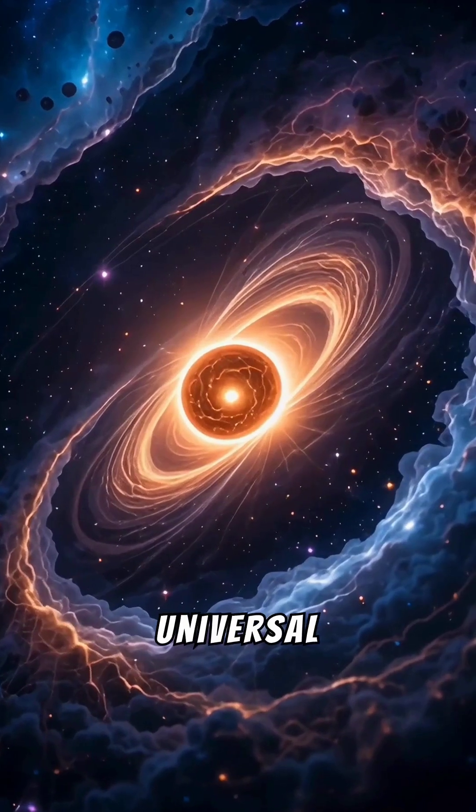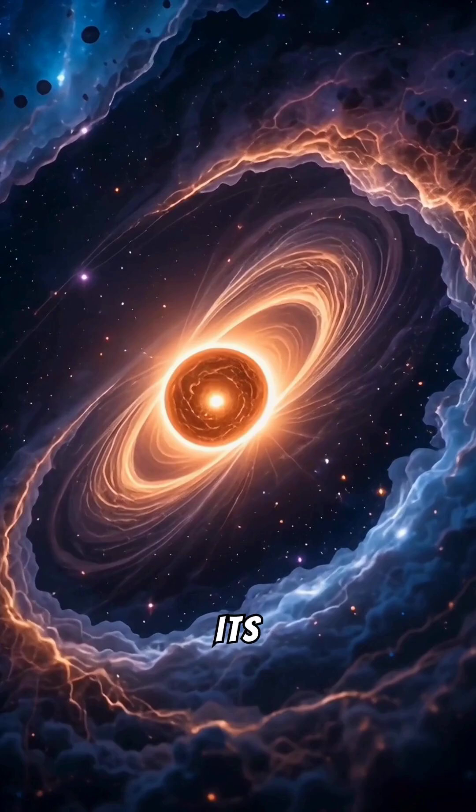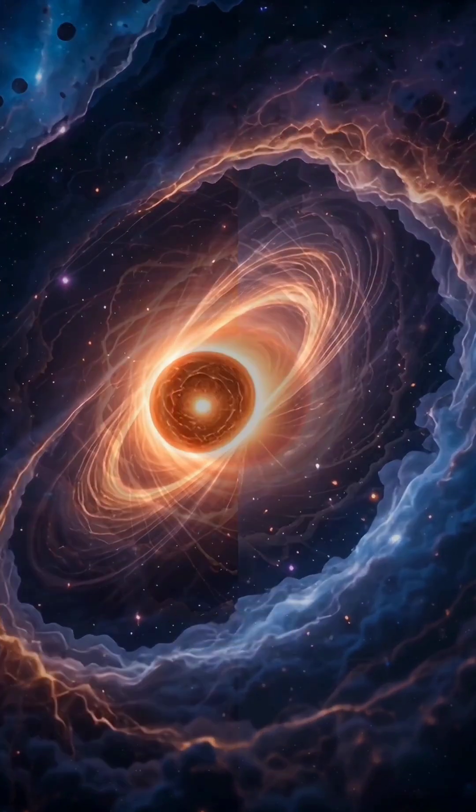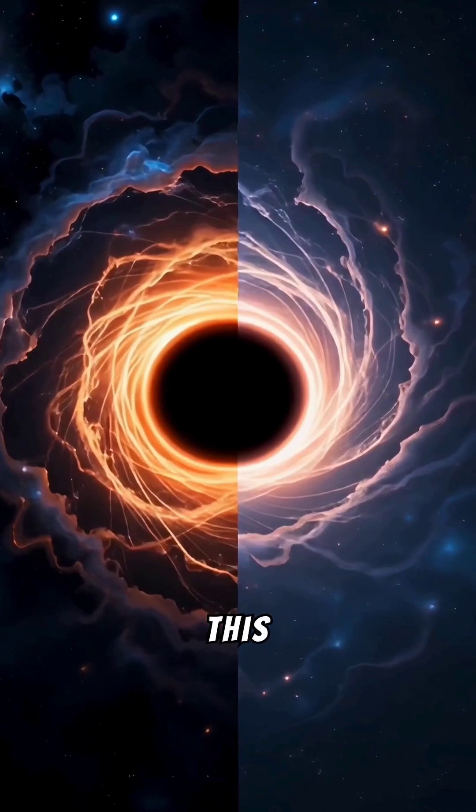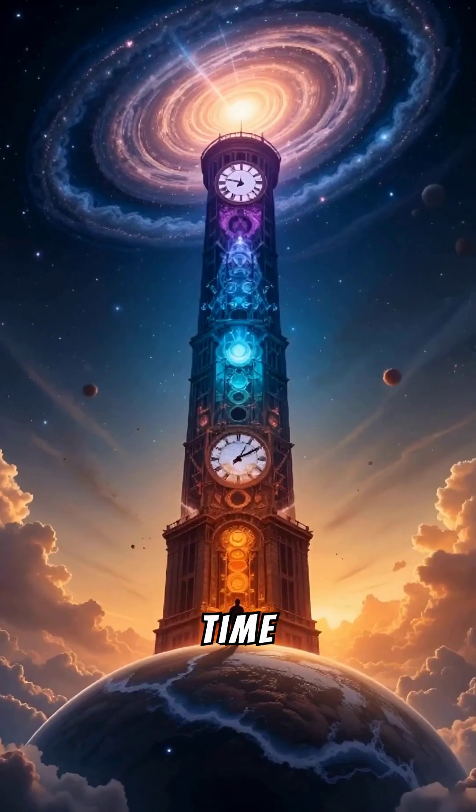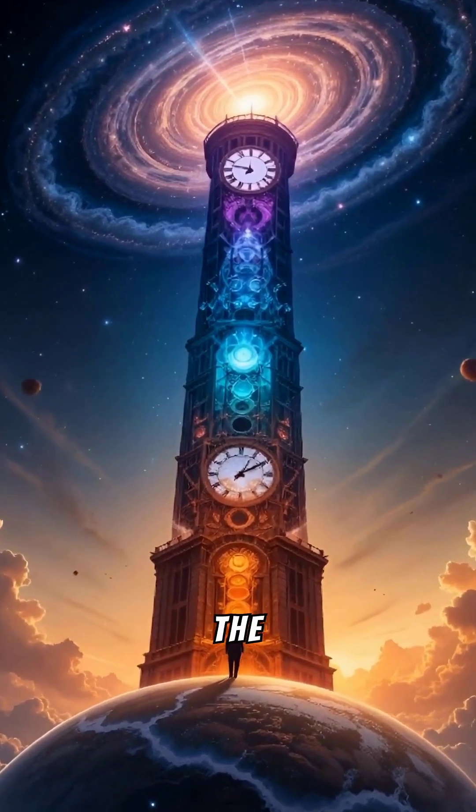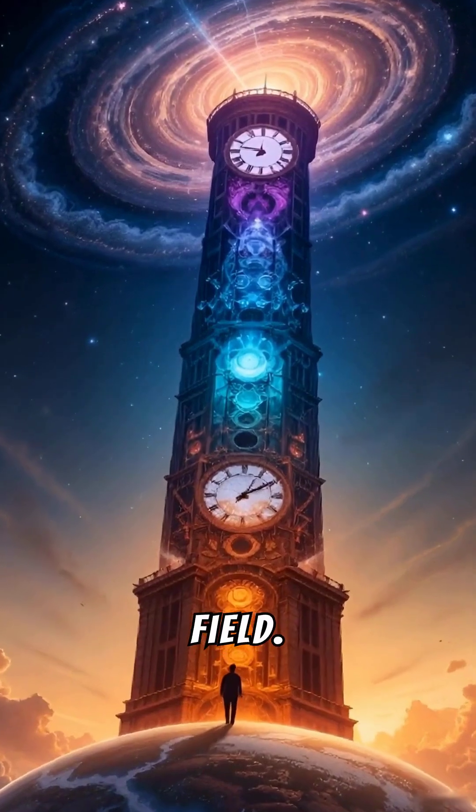Did you know that time is not a universal constant, but that its flow is affected by gravity? Einstein's theory of general relativity predicts this surprising phenomenon. Time passes differently depending on the strength of the gravitational field.